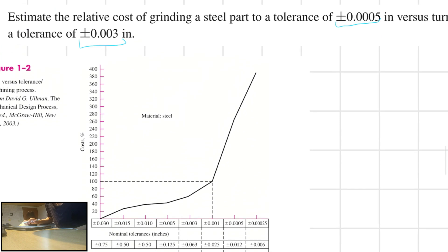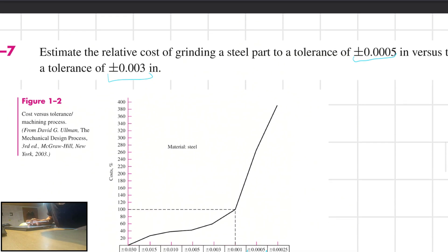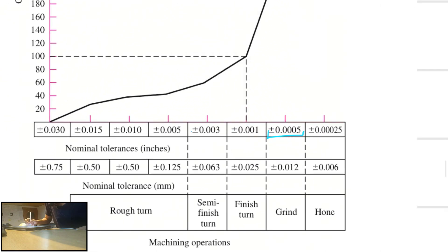The first one is plus or minus 0.0005, which is this one. And the second one is 0.003, two zeros, which is this one.